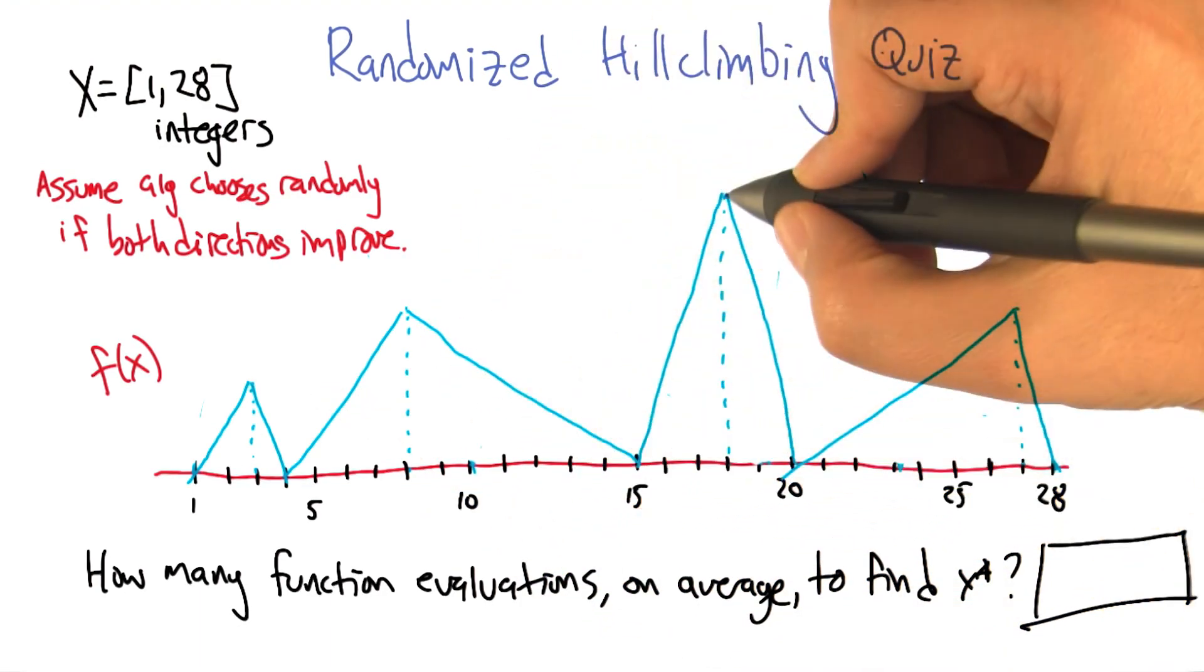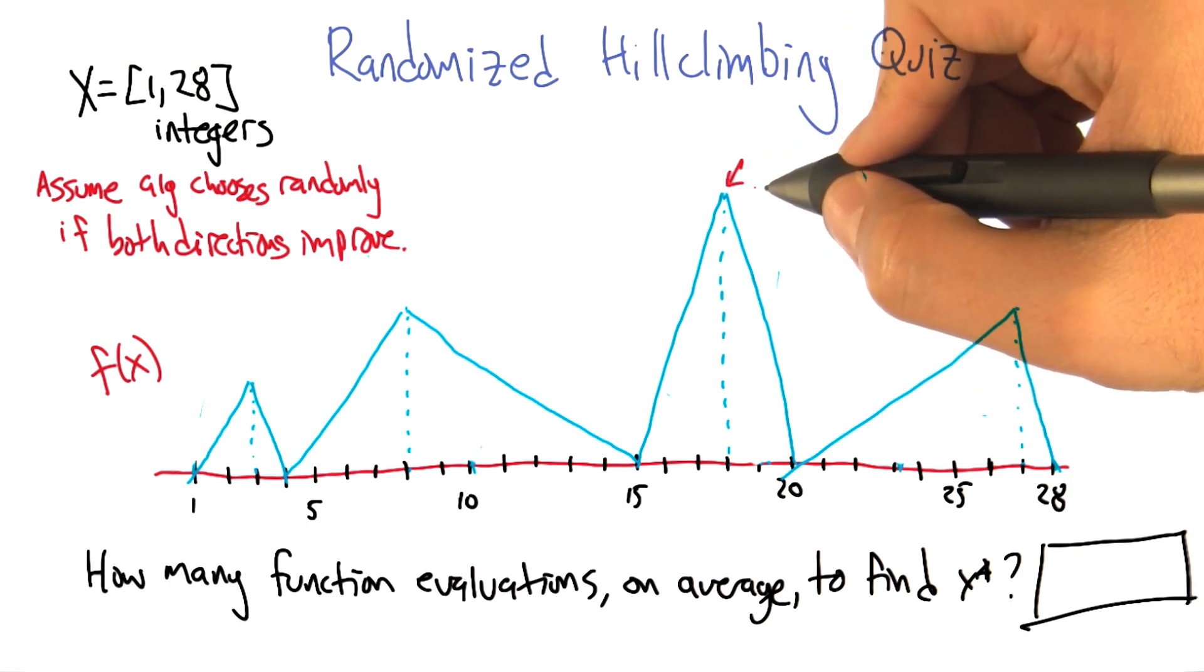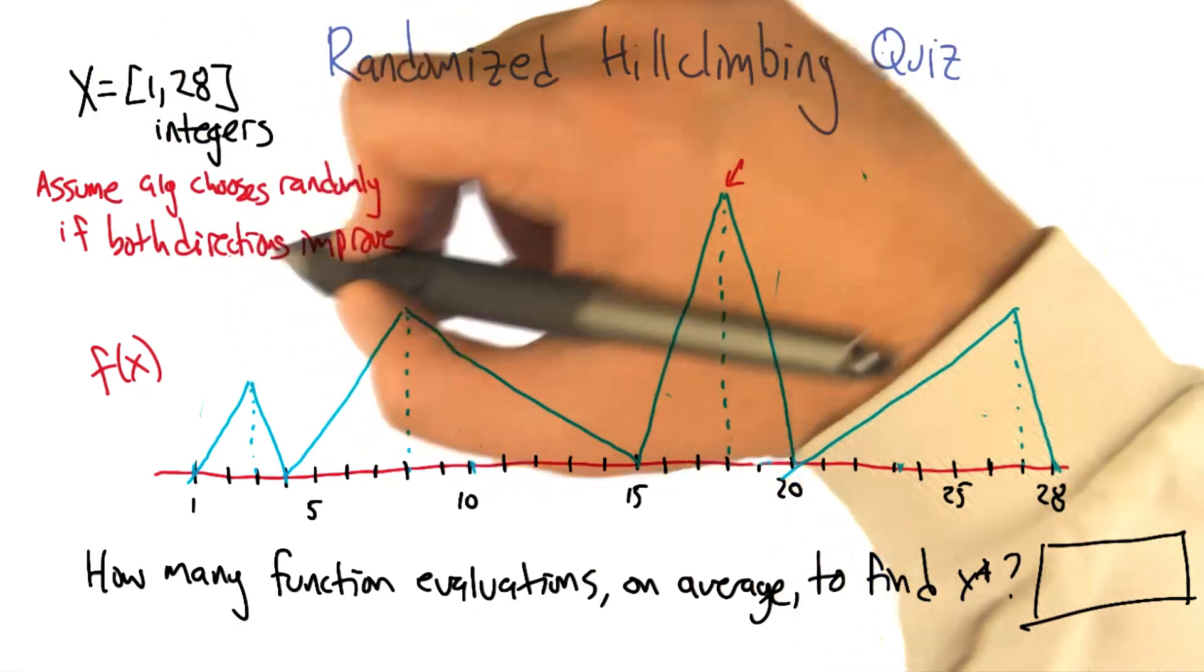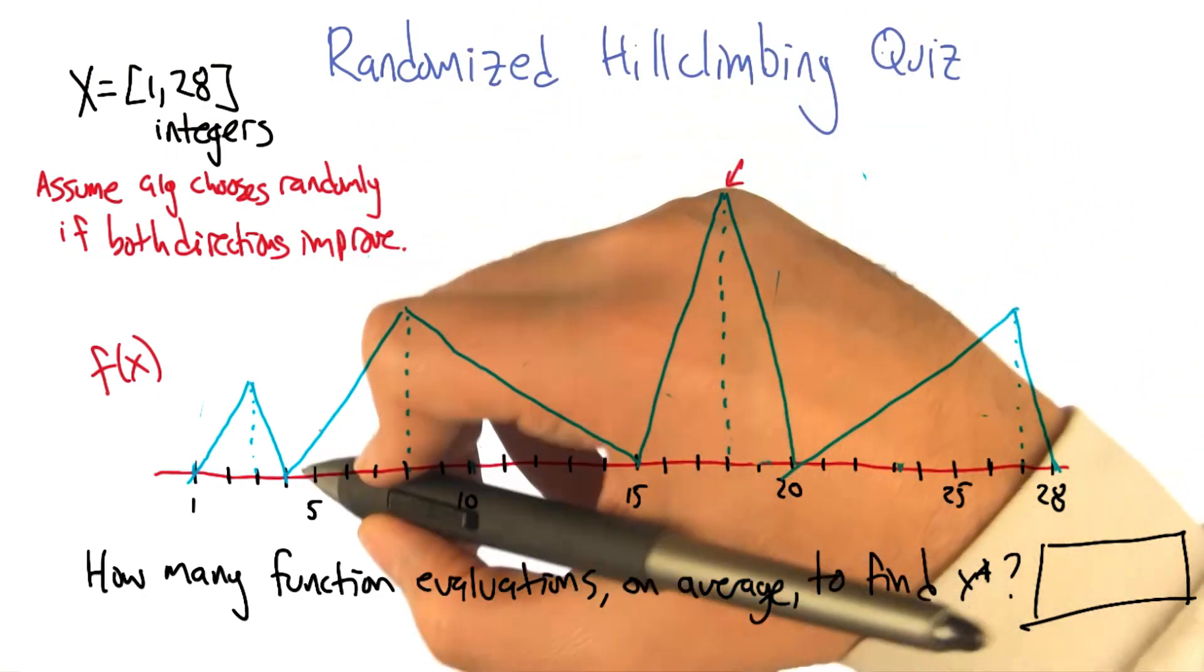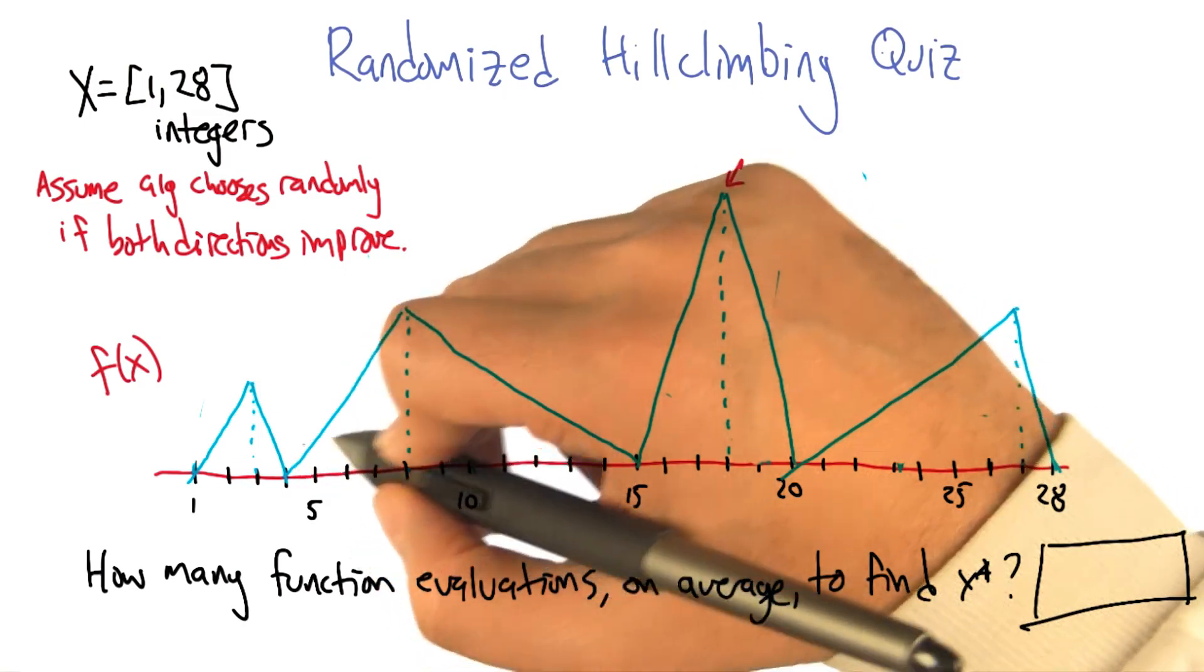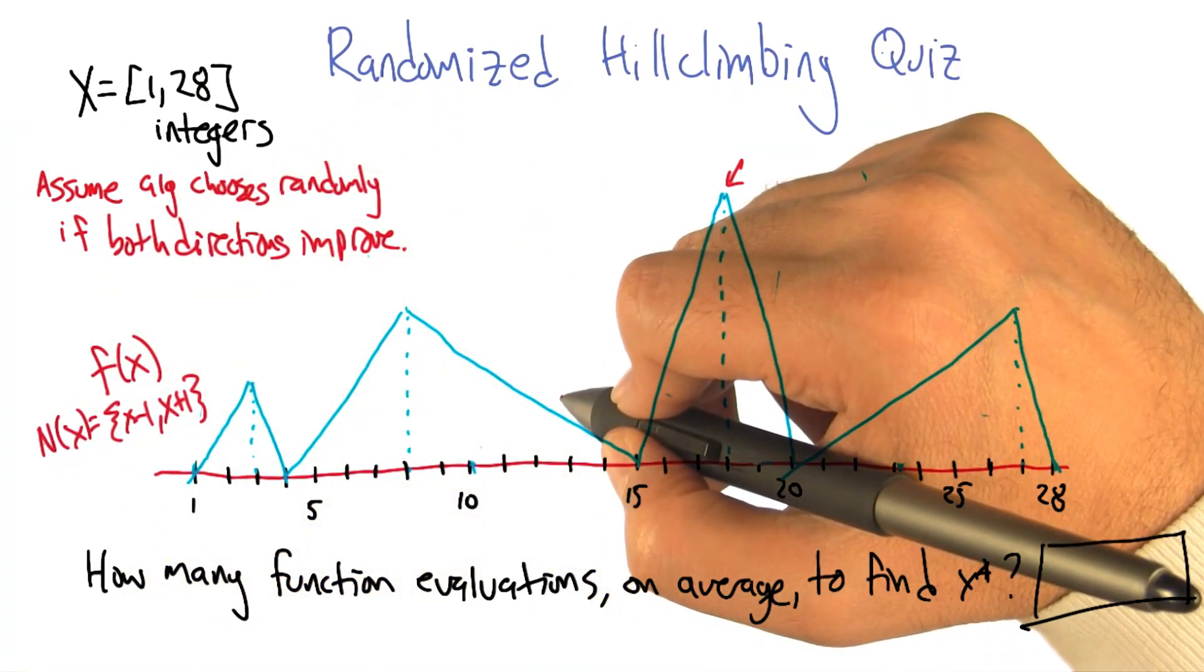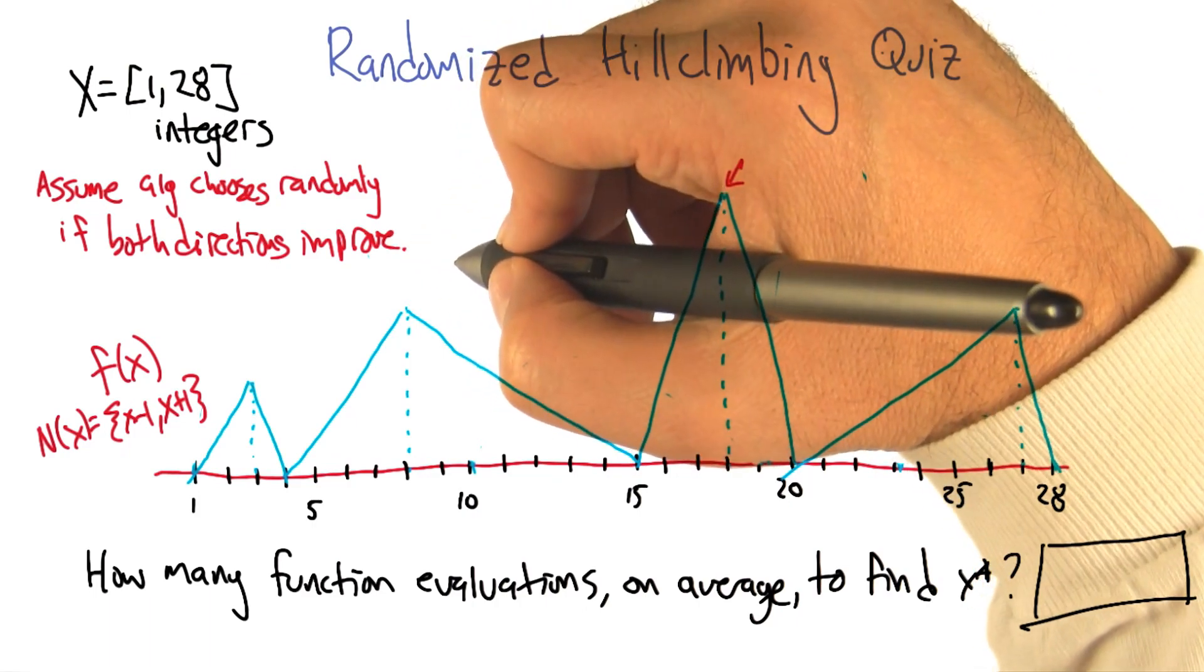And here's the global optimum. We're going to run randomized hill climbing this way: we assume the algorithm chooses randomly if both directions improve, so it flips a coin 50-50. Then it does whatever evaluations it needs to figure out which way to move uphill. We'll use as the neighborhood of X the thing immediately to its left and right, unless you're at 1 or 28, in which case there's just one neighbor.